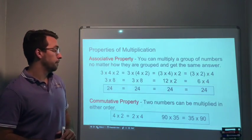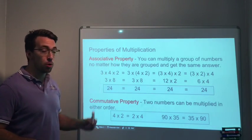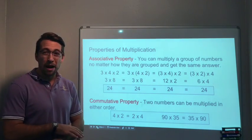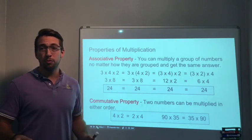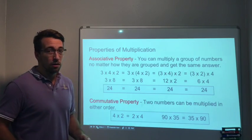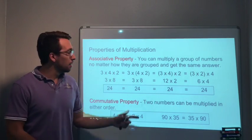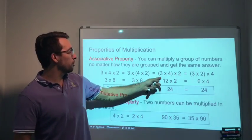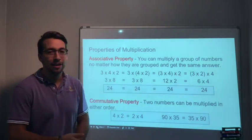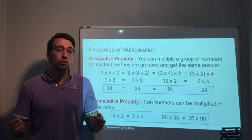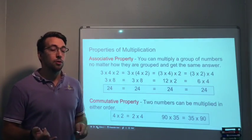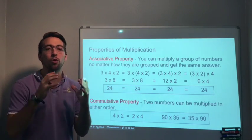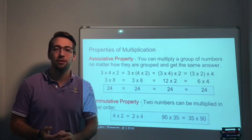Starting out, the associative property. You can multiply a group of numbers no matter how they are grouped and get the same answer. So if you have 3 × 4 × 2, or 3 × (4 × 2), or (3 × 4) × 2, it doesn't matter. The associative property applies to addition and multiplication, and you can reorder or regroup the numbers however best fits you.